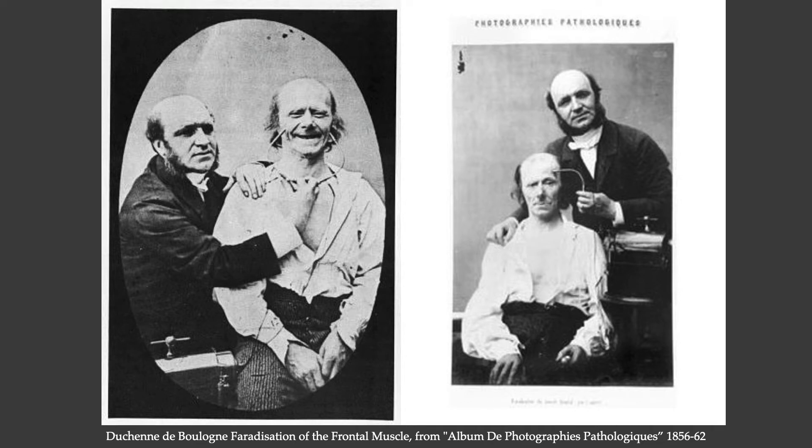These photographs were published in books. Here's a happy expression on the left — his smile every bit as artificially stimulated as the expressions of horror seen previously — and an expression of thoughtfulness on the right, also artificially stimulated by electrodes on muscles. These photographs documenting ostensibly authentic human emotions were used in Darwin's publication on the expression of emotion in man and animals.